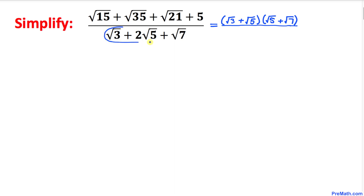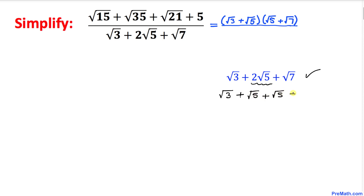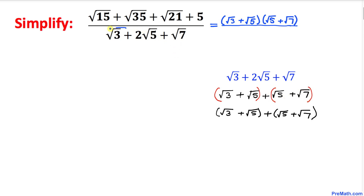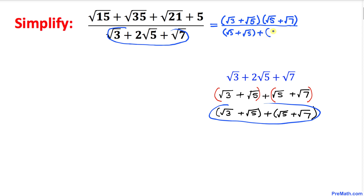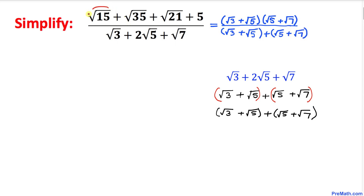Now let's focus on the denominator. I can rewrite 2 times square root of 5 as square root of 5 plus square root of 5. So the denominator becomes: square root of 3 plus square root of 5, in parentheses, plus (square root of 5 plus square root of 7). This transforms our rational expression through simple manipulation.